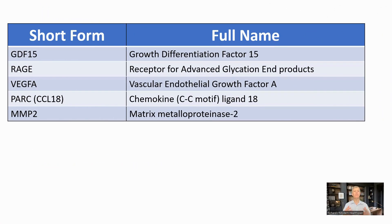There were 14 factors which were significant, but these are the top five that they looked at in more detail: GDF-15, or growth differentiation factor 15; RAGE, or receptor of advanced glycation endpoints; VEGFA, or vascular endothelial growth factor A; PARC, also known as CCL18 or chemokine ligand 18; and MMP2, matrix metalloproteinase 2.